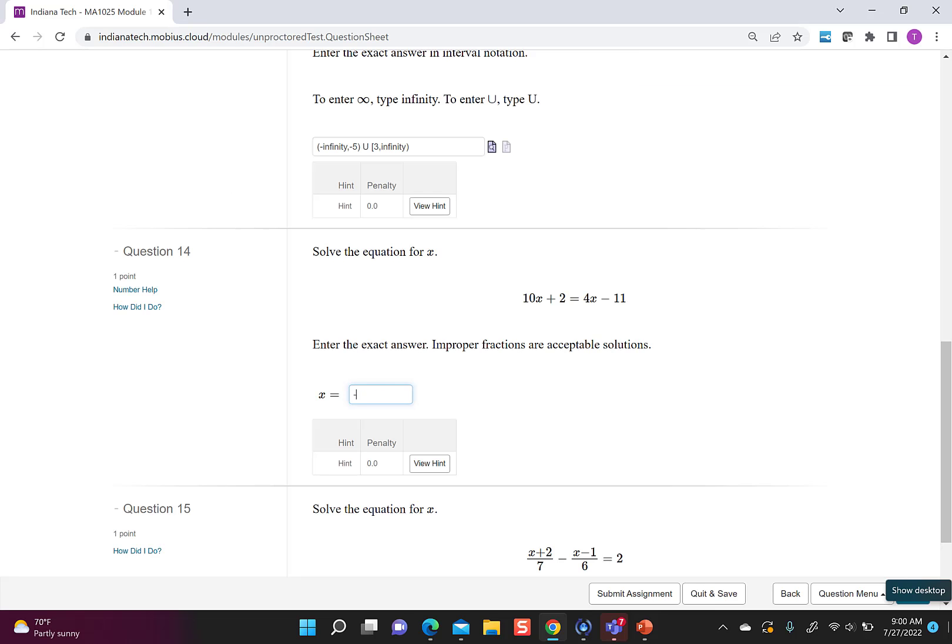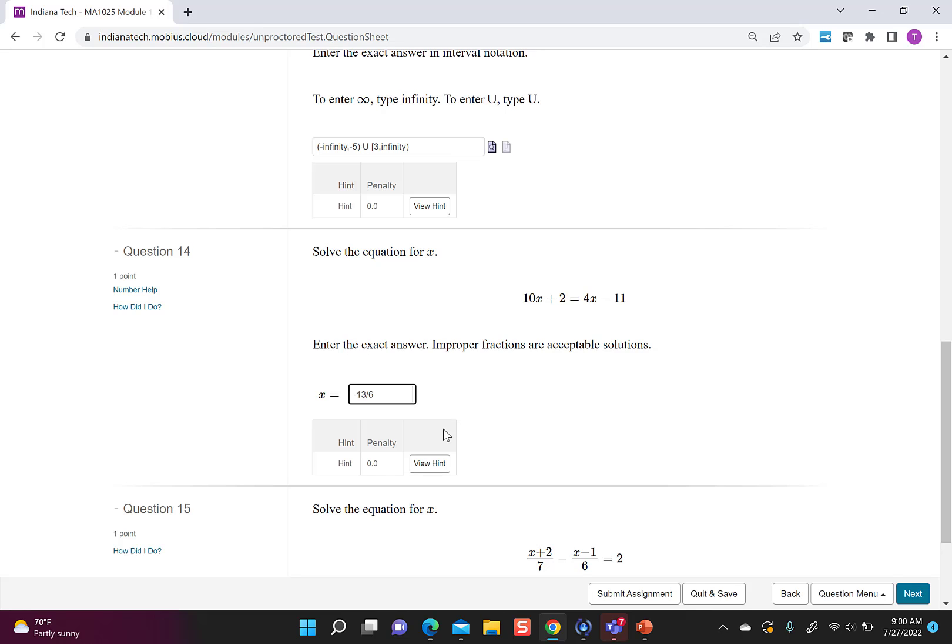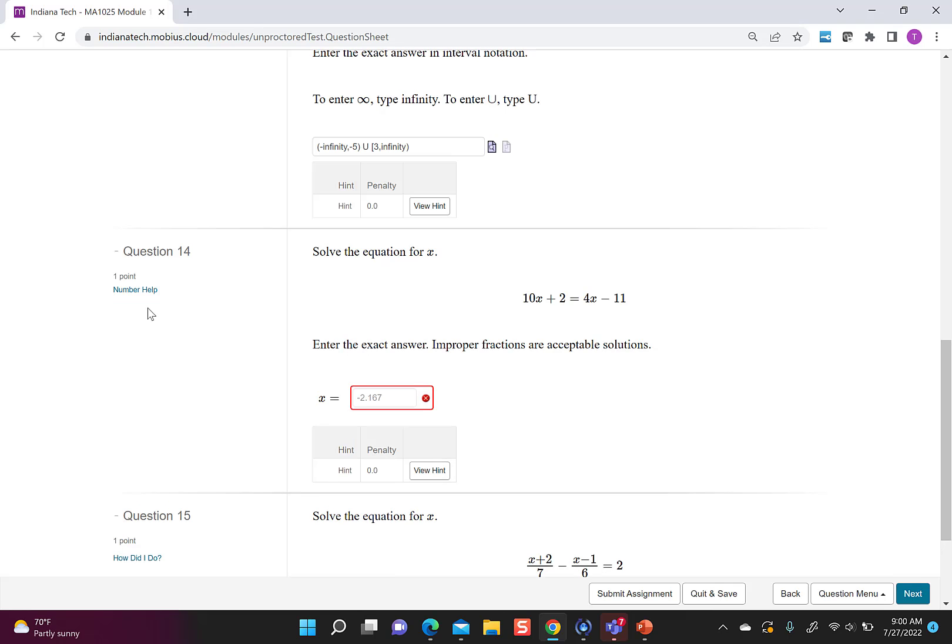Question 14 happens to have negative 13 over 6 as the solution, so I put negative 13 over 6, and I say how did I do, and it says good job. But watch, if I take that out and I instead try to put in negative 2.167, it's going to mark it wrong. So exact says enter a fraction if it doesn't come out to a nice finite decimal representation. Hope that helps.